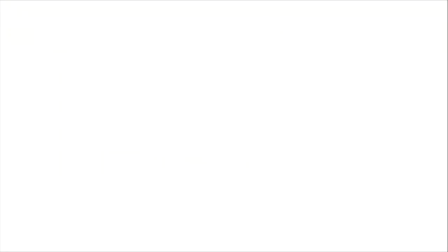Next example: find the seventh term of the sequence, whose general term is a sub n is equal to n all over 3n plus 1. So on this problem, all we have to do is to look for the seventh term. It means we are not going to look for the first, second, so only the number 7 term is what we are looking for.